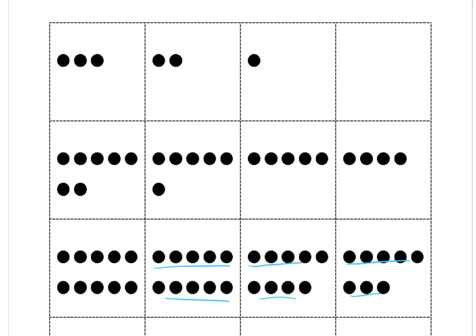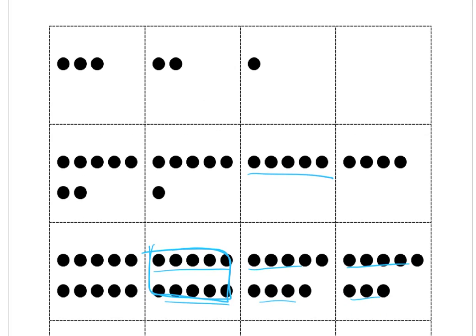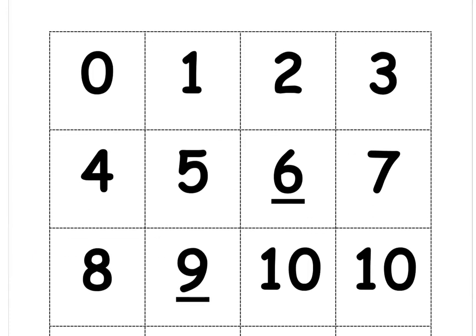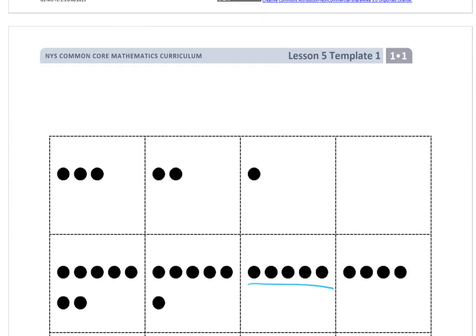So you can see the cards have the dots in five group rows and they make ten frames like this guy here in the middle. On the other side, if you're going to print them out, they have the numbers. So like here you have a zero, a one, and a two, and a three. On the other side it goes backwards: zero, one, two, and three. But that's what the five group cards look like.